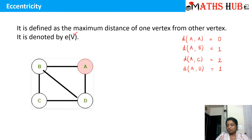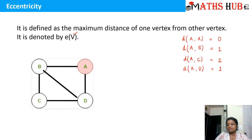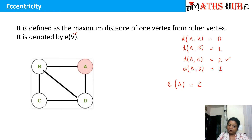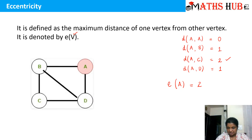We have 4 vertices and we have calculated the distance of A from each of the other vertices. From this list, we choose the one with the maximum distance, which is 2. So the eccentricity of vertex A is defined as 2. Eccentricity tells us about the maximum distance of one vertex from the others.